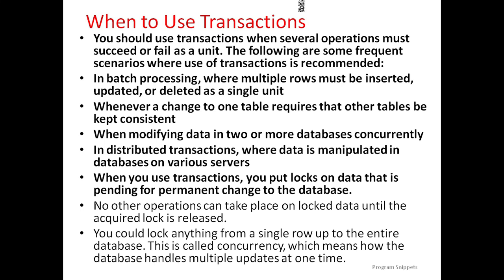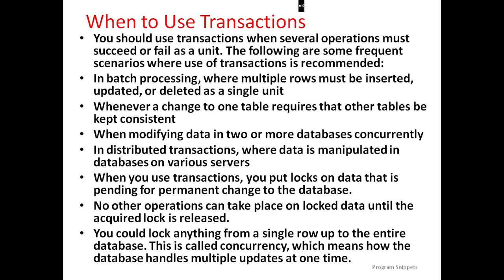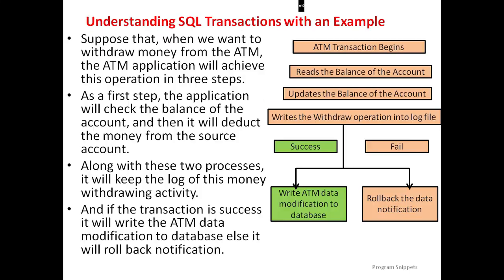When you use transactions, you put locks on the data that is pending for permanent change to the database. No other operations can take place on locked data until the acquired lock is released, and you can lock anything from a single row up to the entire database. This is called concurrency — that is, how the database handles multiple updates at one time.